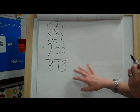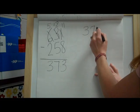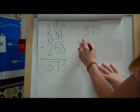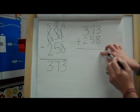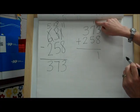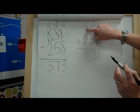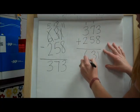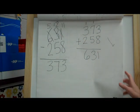Now let's check it by adding and make sure we got the correct answer. So we're going to start with 373 plus 258. 3 plus 8 is 11. 7 plus 1 is 8. 8 plus 5 is 13. 3 plus 1 is 4. 4 plus 2 is 6. We wound up with the same number. So once again, we got it correct.